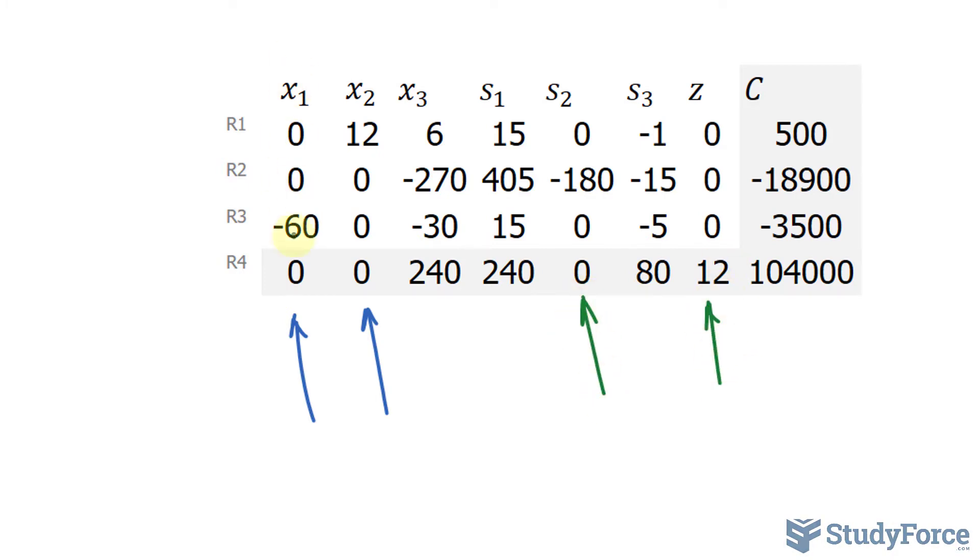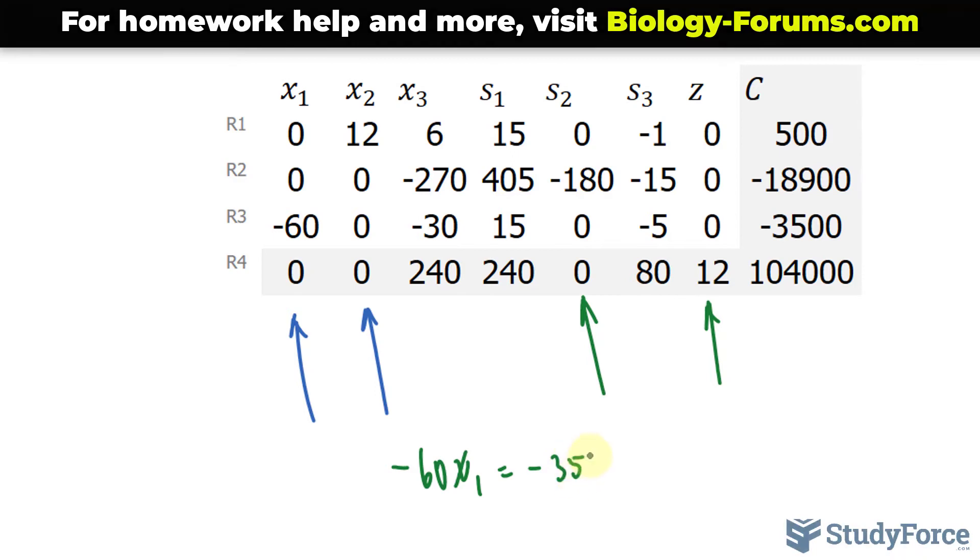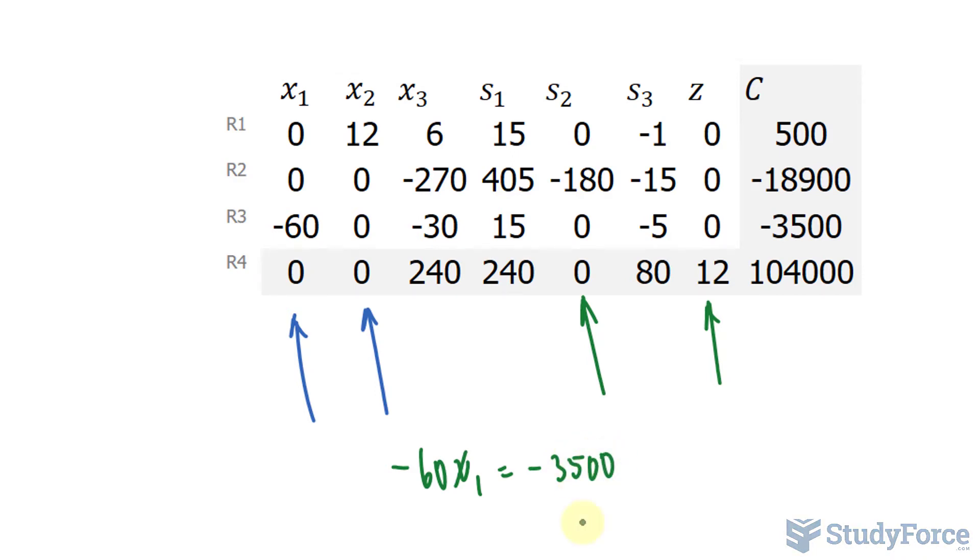Beginning with x sub 1, we have negative 60 x sub 1 is equal to negative 3,500. Solving for x sub 1 should give you 58 and a third.